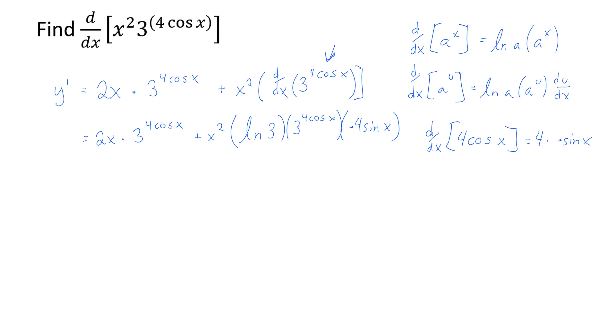And hey, we actually just found the derivative just like that. We can clean it up maybe a little bit. We have 2x times 3 to the 4 cosine x plus... Just to bring terms out, and in fact, I'm going to change this to a minus because I'm going to bring out my negative 4 out front. Negative 4x squared, natural log of 3...